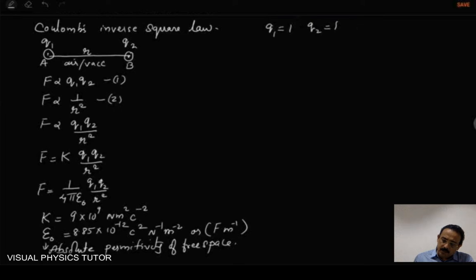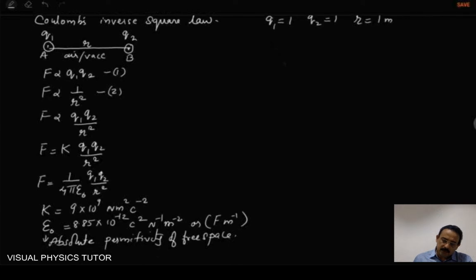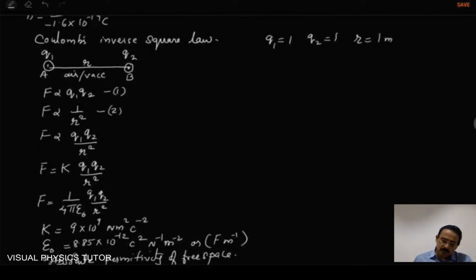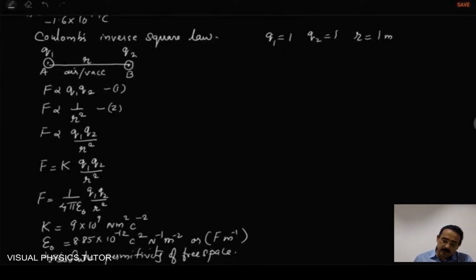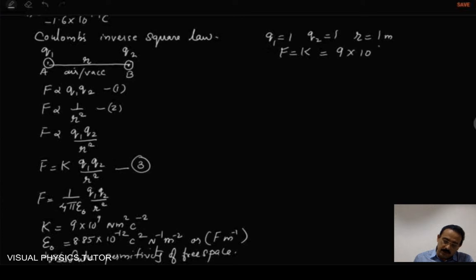Suppose they are separated by a distance of 1 meter — meaning charge Q1 at point A has one coulomb and Q2 at point B has one coulomb, separated by 1 meter. By substituting these values in the equation F equal to K Q1 Q2 by R square, we can find the value of F to be equal to K, which gives a value of 9 into 10 to the power 9 Newton.